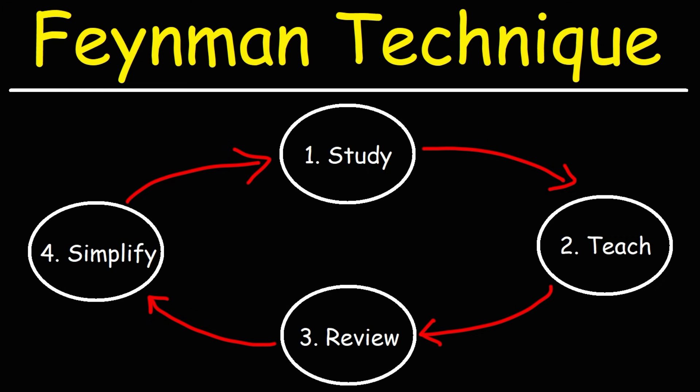Now, there's four key areas in the Feynman Technique. Number one, the first thing you want to do is you want to define what exactly it is that you wish to learn, and then take action by studying that subject or topic.